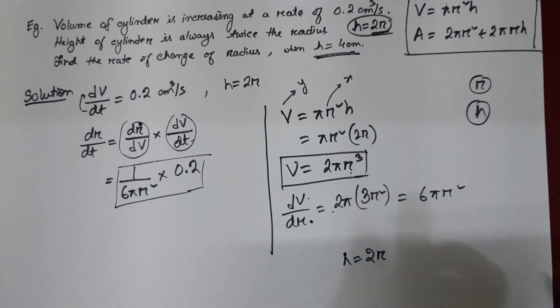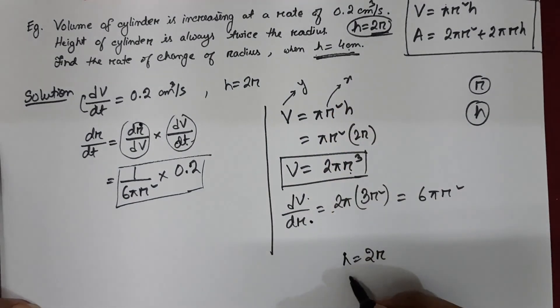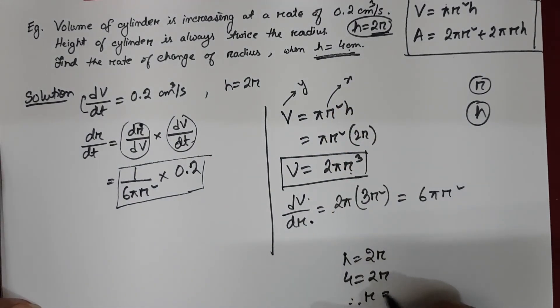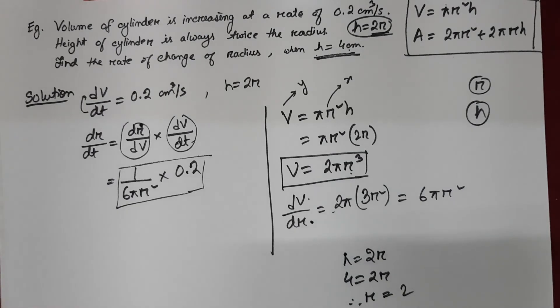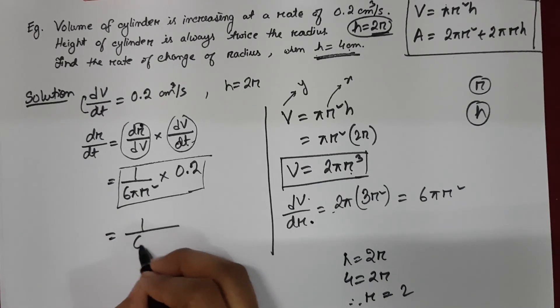So h equals to 2r and the value of h is 4. So that's how you get your value of r. So now replace the value of r here.